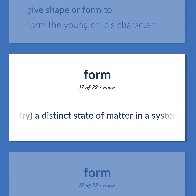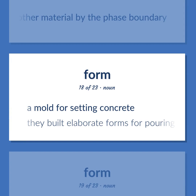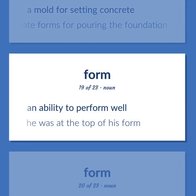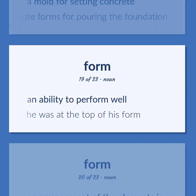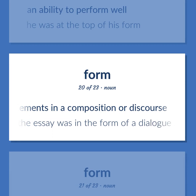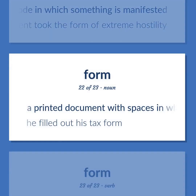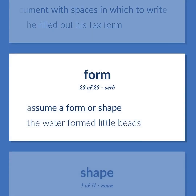Form: Physical chemistry — a distinct state of matter in a system; matter that is identical in chemical composition and physical state and separated from other material by the phase boundary. A mold for setting concrete — they built elaborate forms for pouring the foundation. An ability to perform well — he was at the top of his form. An arrangement of the elements in a composition or discourse — the essay was in the form of a dialogue. A particular mode in which something is manifested — his resentment took the form of extreme hostility. A printed document with spaces in which to write — he filled out his tax form. Assume a form or shape — the water formed little beads.